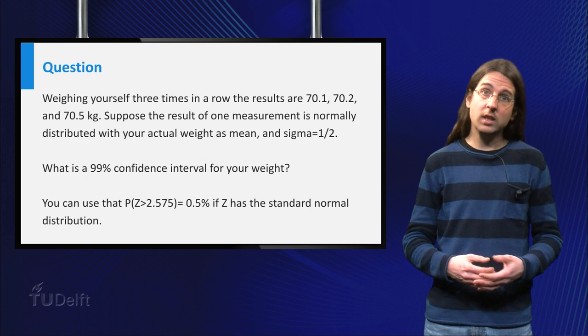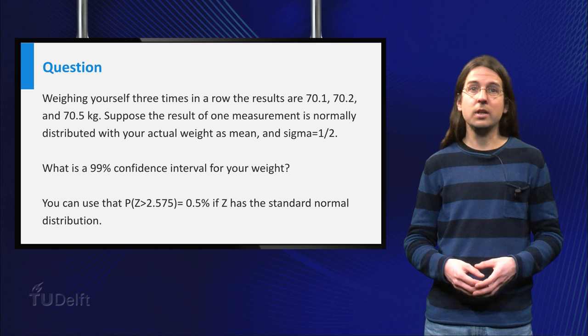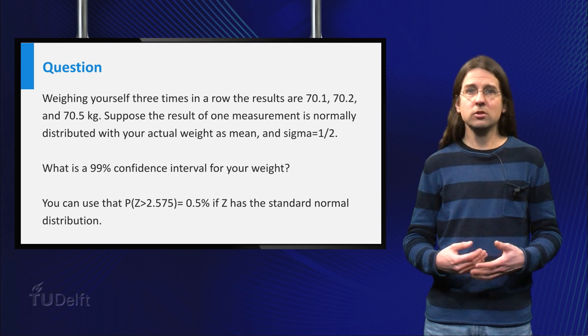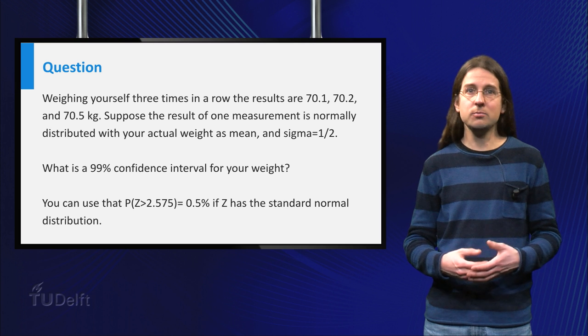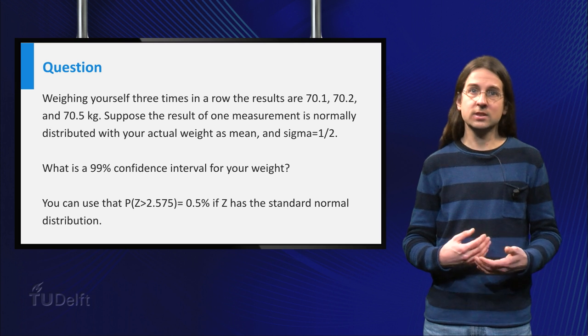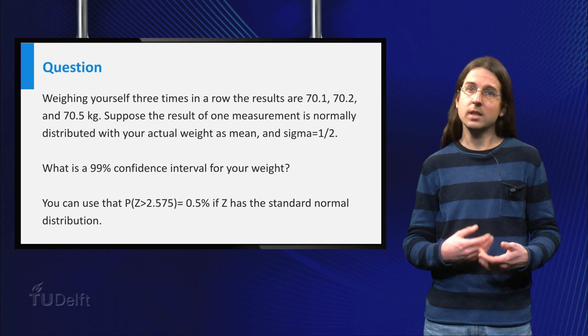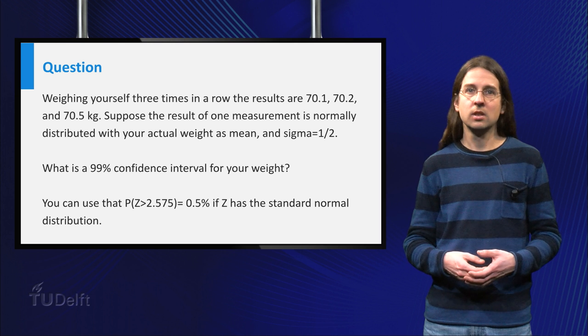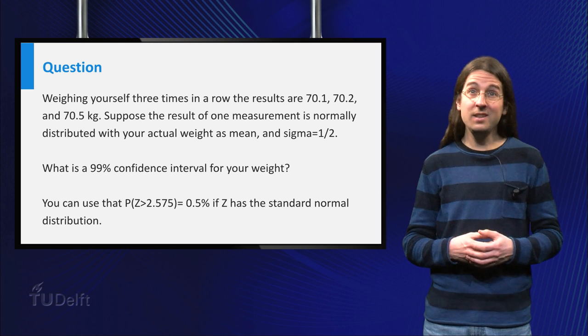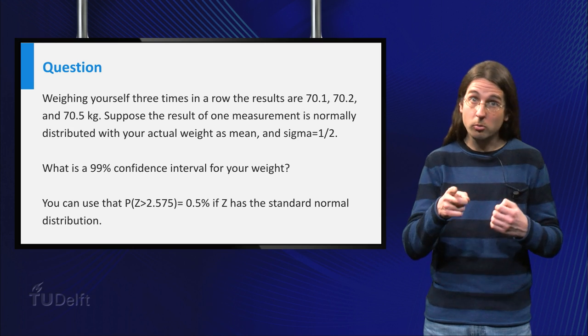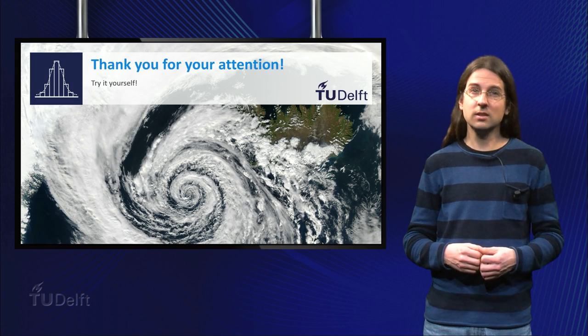Before class I would like you to try the following problem. Suppose you weigh yourself 3 times on the scale and get the results 70.1, 70.2 and 70.5. What is a 99% confidence interval for your weight? Good luck!